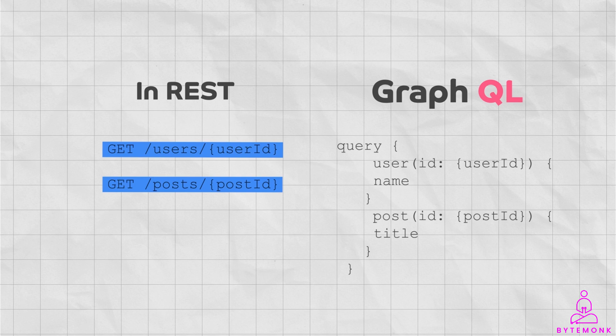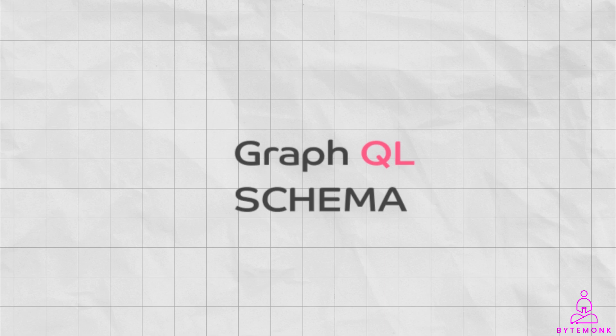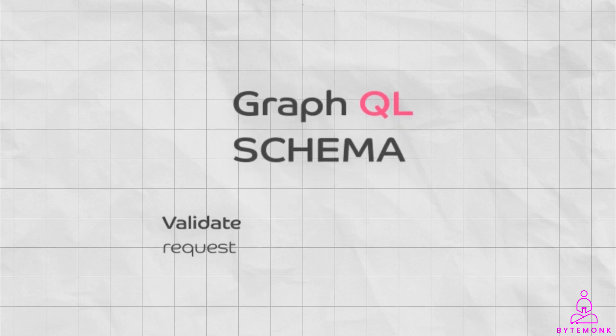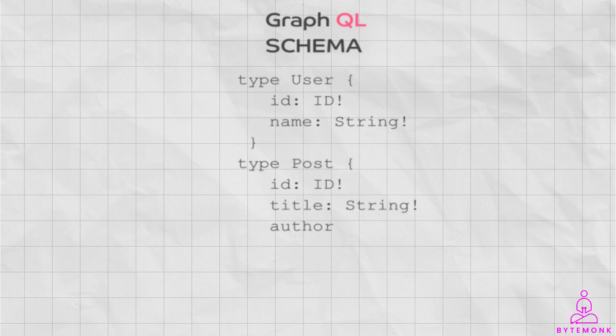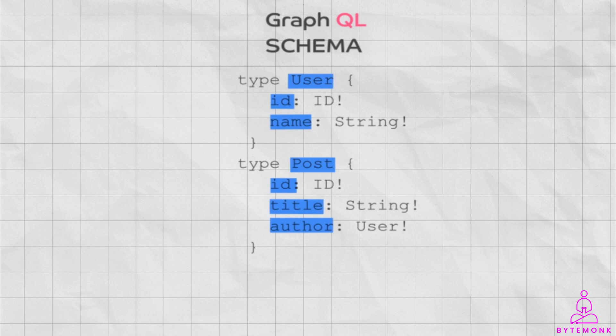This makes GraphQL more flexible and easier to evolve. The schema in GraphQL is a definition of the types of data that are available and how they are related to each other. It is used to validate requests and to generate responses. For example, a schema might define two types: user and post. The user type has two fields — ID and name — and the post type has three fields: ID, title, and author. The author field on the post type is a reference to the user object, meaning a post can have one author and an author can have multiple posts.